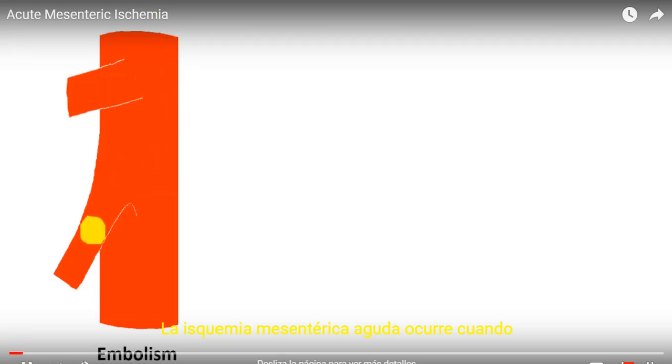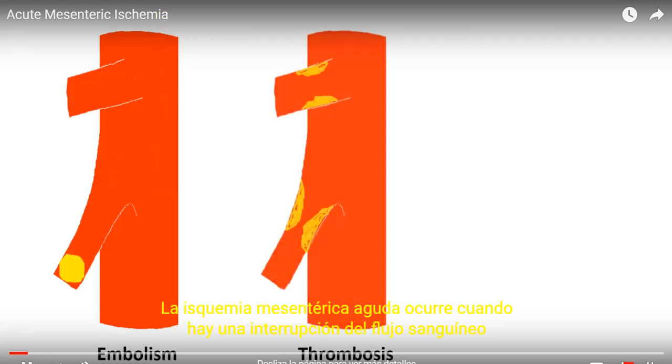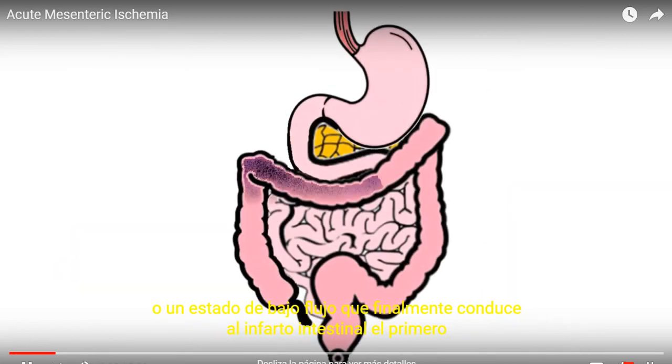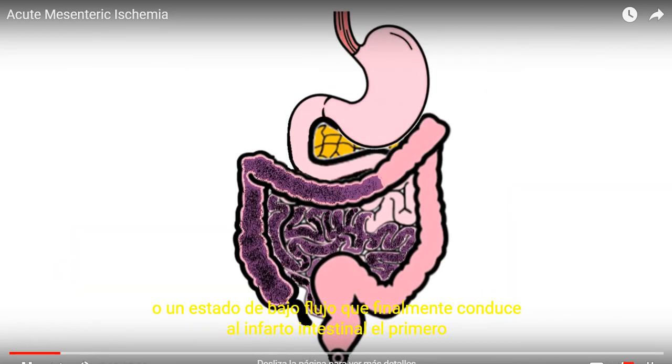Acute mesenteric ischemia occurs when there is an interruption of blood flow to the intestines by embolism, thrombosis, or a low flow state, ultimately leading to intestinal infarction.